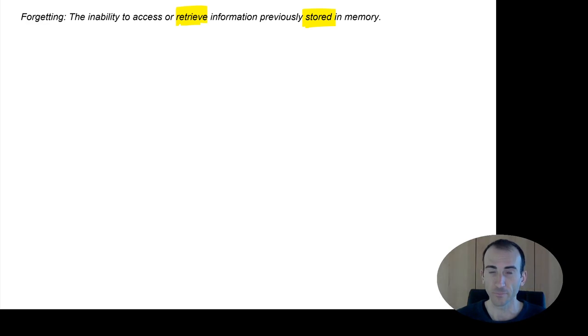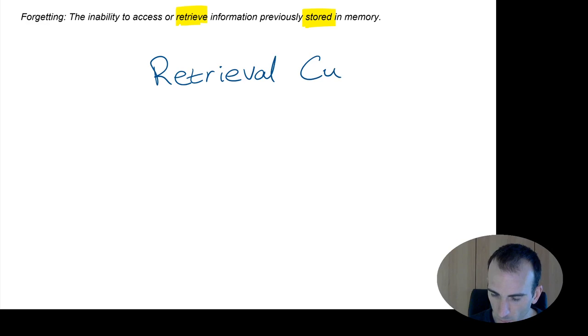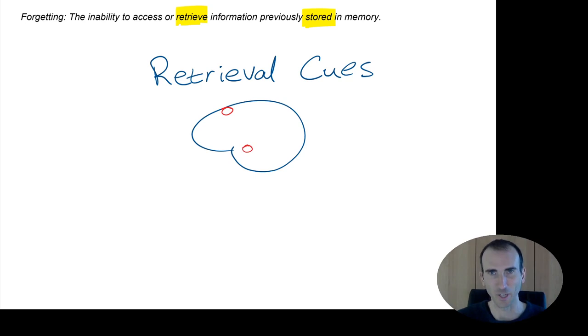The first factor that I want to talk about is the thing called retrieval cues. Retrieval cues refer to different stimuli that help us to retrieve or locate information in memory. If you imagine your brain a bit like a map and let's say you've got a memory located right here. I'm obviously oversimplifying but this is an illustration to try and explain what I'm talking about. So you've got a memory stored in your cerebral cortex right there and let's say you've just heard something. That information that you've just heard is in your primary auditory cortex.